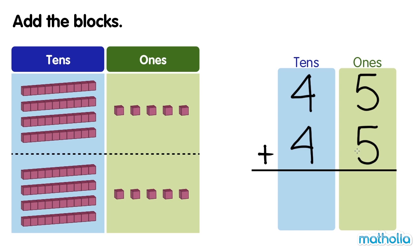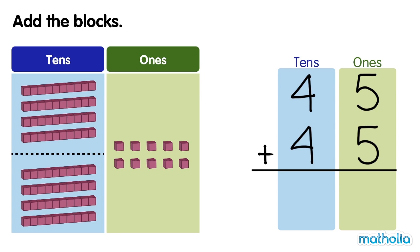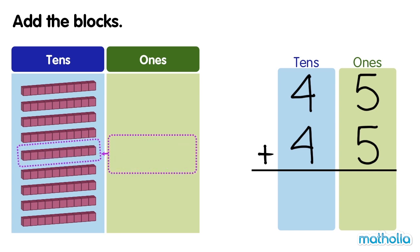Start by adding the ones. 5 ones plus 5 ones equals 10 ones. We can regroup the 10 ones into 1 ten. There are no ones left, so we write 0 in the ones column and 1 ten in the tens column.